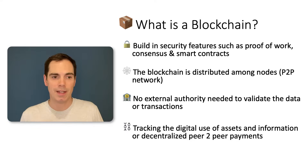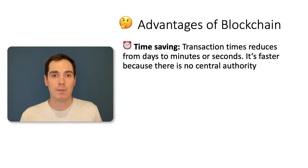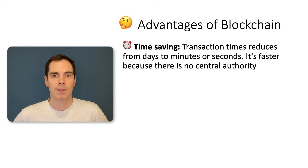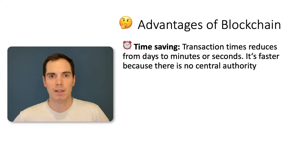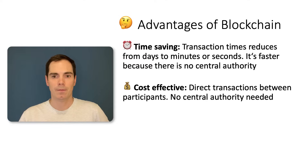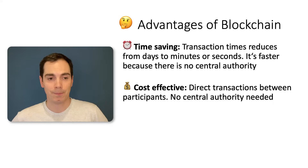So you can save and track any kind of digital assets in a blockchain. What are the advantages? It's time saving because transaction times reduce from days to minutes or seconds. It's faster because there's no central authority. With a bank transfer, the central authority takes the money, does some validations, and it can take days until the money arrives — depending on the country and location. Blockchain is really time saving, cost effective because of direct transactions between participants, and no central authority is needed.